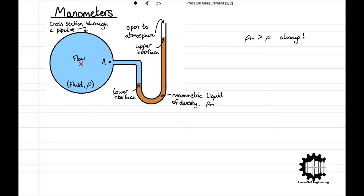The lower interface between the pipeline fluid and the manometric liquid is in the left side of the manometer, and the upper interface is in the right side of the manometer, and is at atmospheric pressure, as the tube is open to the atmosphere. Therefore, the upper interface has a gauge pressure equal to zero.